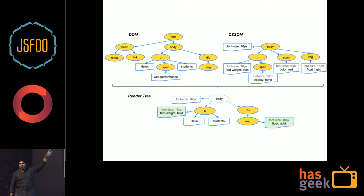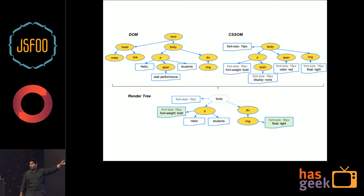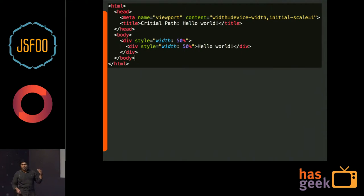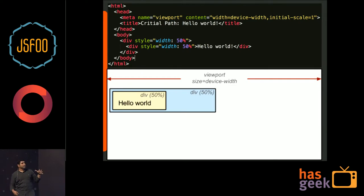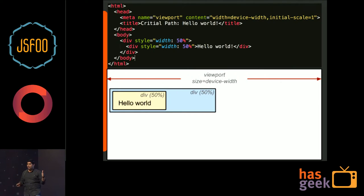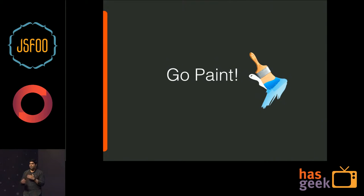To summarize: given a simple HTML with meta tags, link tags and paragraph tags, the browser calculates the DOM and CSS object model. In the render tree, elements with display:none are eliminated. Always remember to add meta tags for width equal to device-width and an initial scale, so the browser knows the available width. For example, a first div with 50% width containing another div with 50% gives an overall 25% of the viewport. Then the browser calculates layout and paints the result.